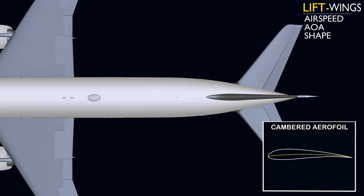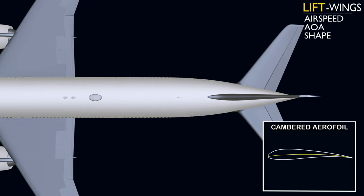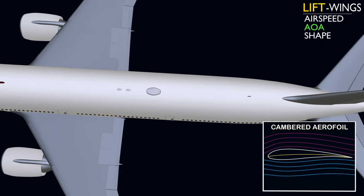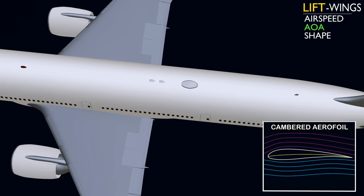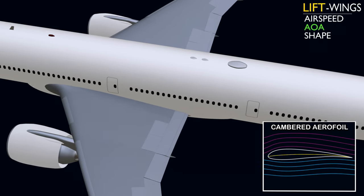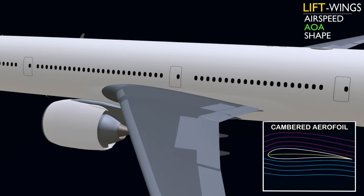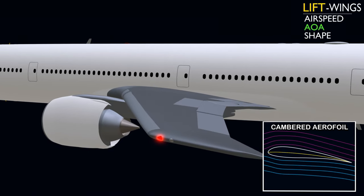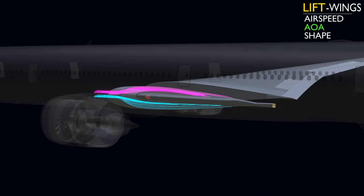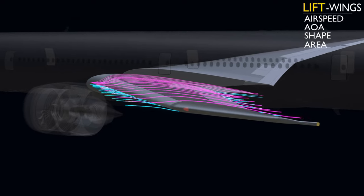The wings of the aircraft are cambered aerofoils. A cambered aerofoil turns the airflow and generates lift, even if the angle of attack is zero. Increasing the angle of attack will further increase the lift. The lift on the wing is generated on the opposite side of the airflow turn.